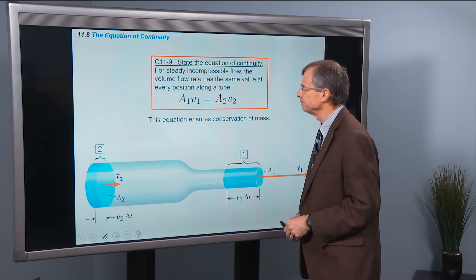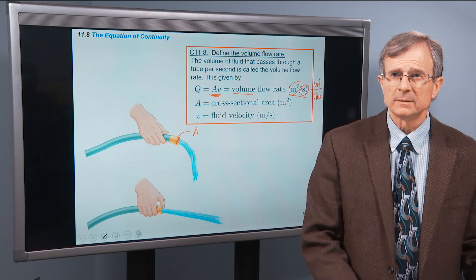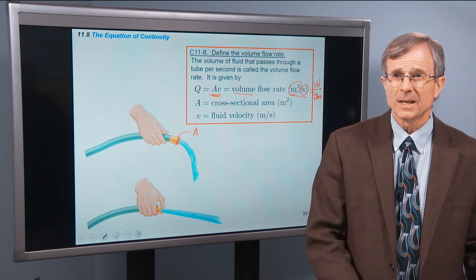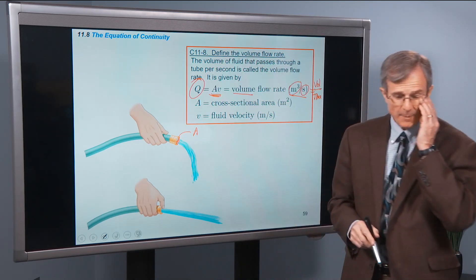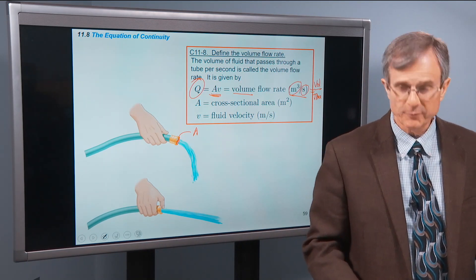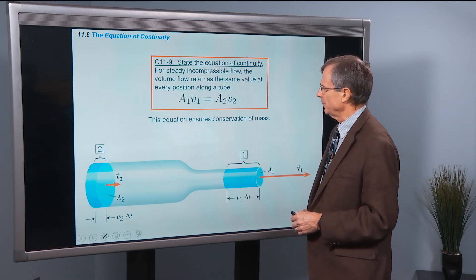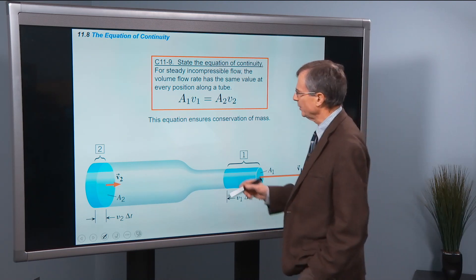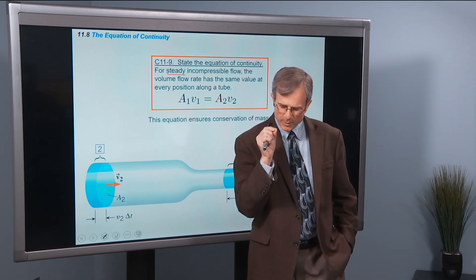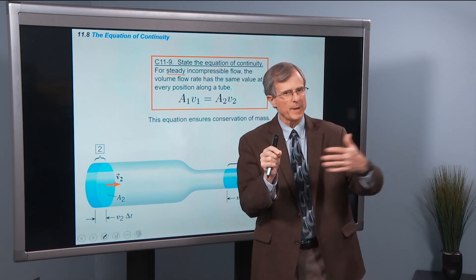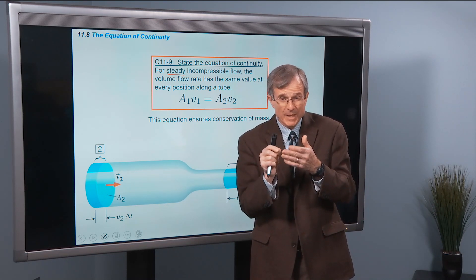Equation of continuity. So again, remembering that A times V is called the volume flow rate. We use the symbol capital Q to denote the volume flow rate. The equation of continuity says the following. For steady, incompressible flow, so we've already introduced the idea of steady. That means that at a particular point in the fluid, as water rushes past it, the velocity doesn't change with time. That's steady flow.